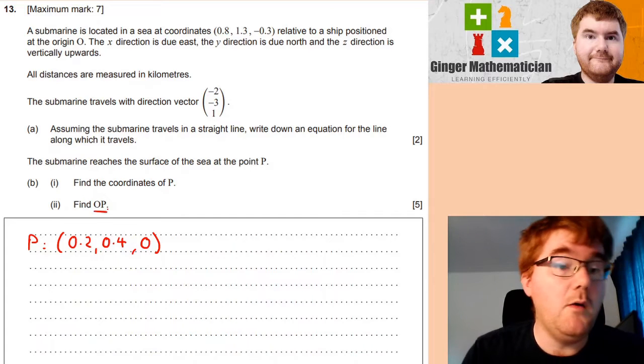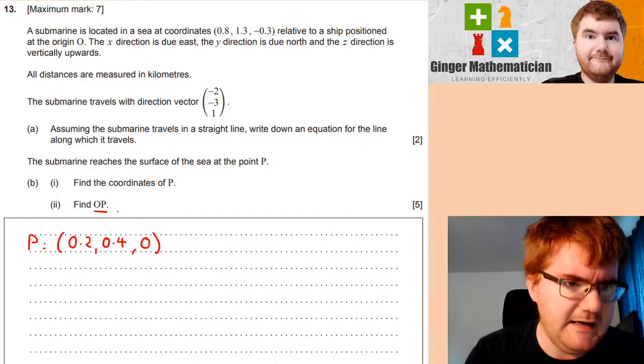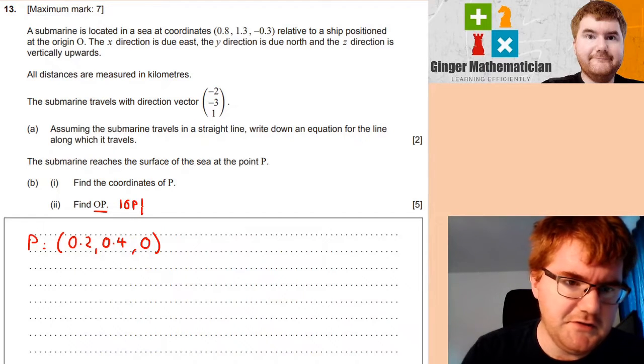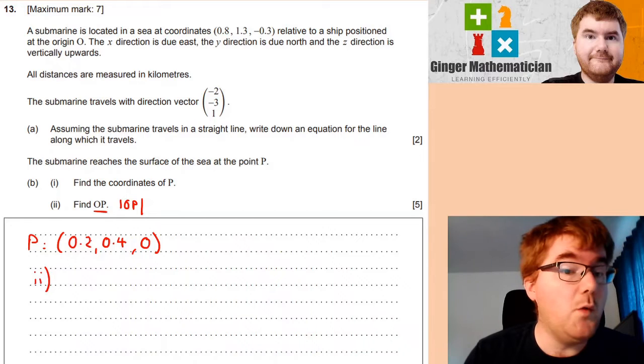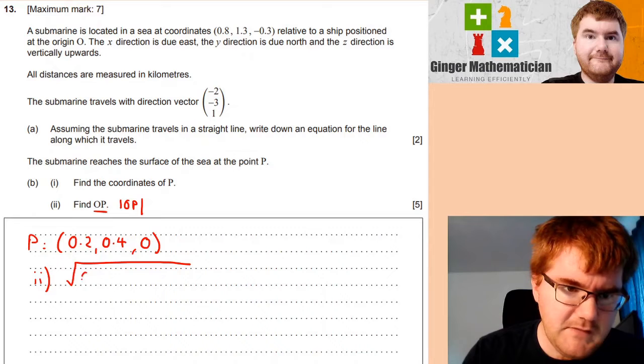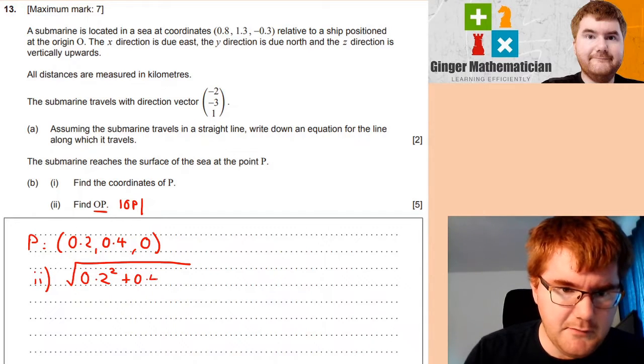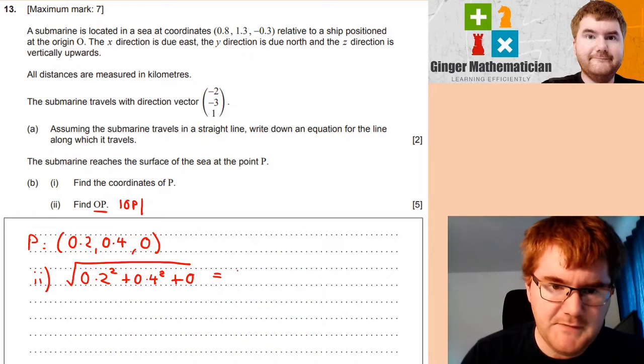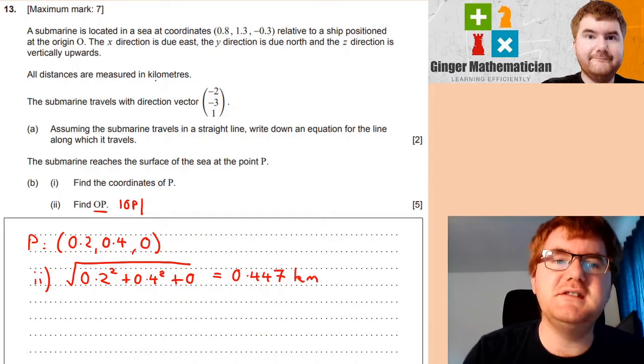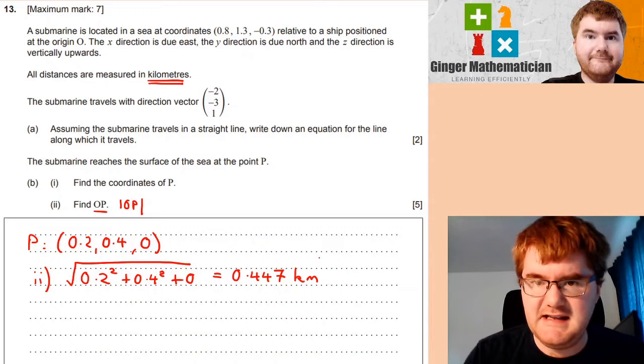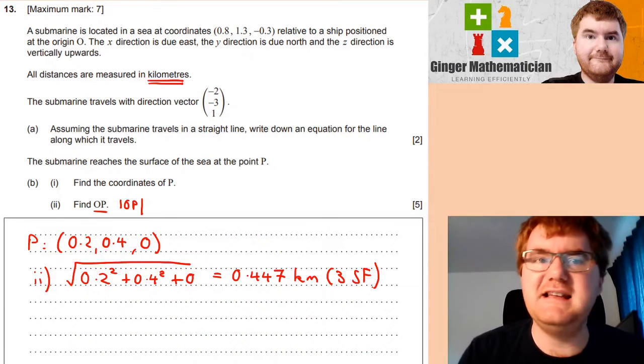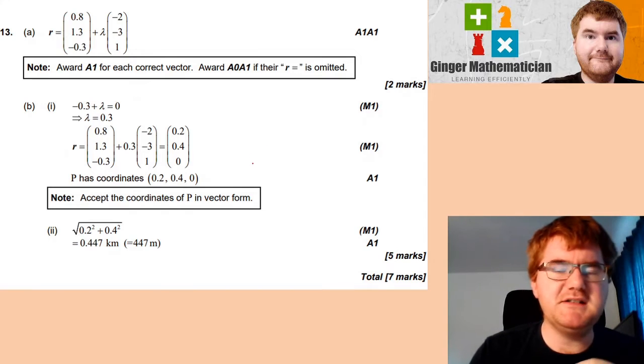I'm slightly confused with the mark scheme here. They wanted to find OP. What they wanted from the mark scheme is the magnitude of the vector. To work out the magnitude of any vector, we simply use Pythagoras. So we're going to work out √(0.2² + 0.4² + 0²). This gives you 0.447 kilometres. Remember, all distances are measured in kilometres. So we need to write kilometres at the end. And of course, we have done this to three significant figures.